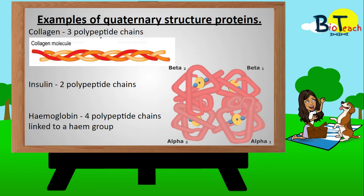To finish, here are some examples of quaternary structure proteins, and I will be creating another video looking at these in more detail. The first example is collagen, which plays a structural role in cells and is made up of three polypeptide chains. The second example is insulin, made up of two polypeptide chains. And finally hemoglobin, which as we saw is made up of four polypeptide chains — two alpha and two beta — and the yellow rings with blue pentagons highlight the heme group attached to each of those chains.